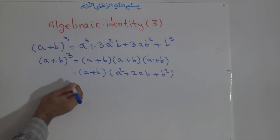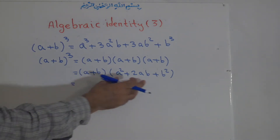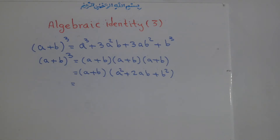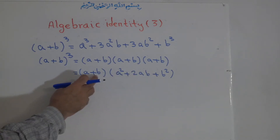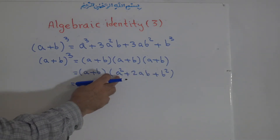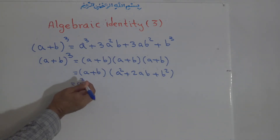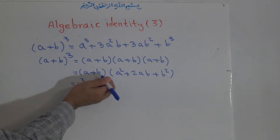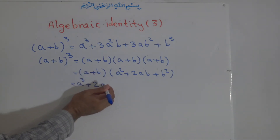Now we multiply this binomial with the trinomial. First, we multiply the first term of the binomial with all terms: a times a squared is a cubed, and a times 2a gives positive 2a squared b.